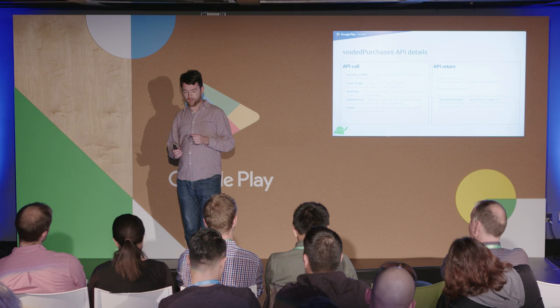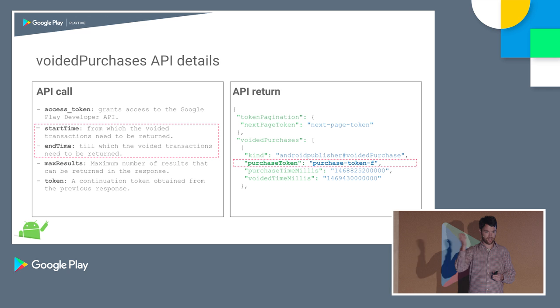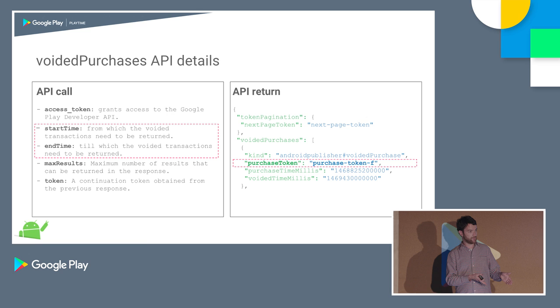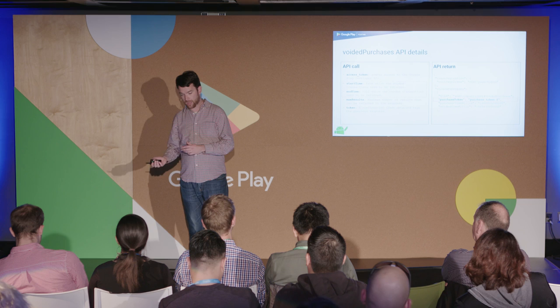Let me talk about the three different approaches we've seen developers use with our data, going from really simple to more complicated. The simplest way: a user purchases 10,000 coins for $10; we send you the voided order, and you claw back exactly those 10,000 gems from the user's balance. The second case is where developers don't only claw back the 10,000 gems, but also take back anything that was added on — special powers, special characters — and claw those back as well.